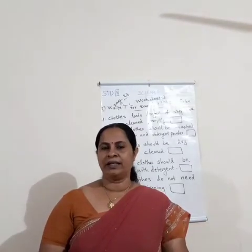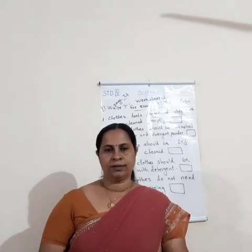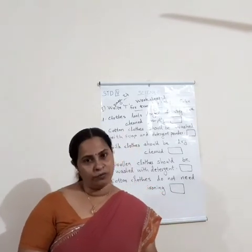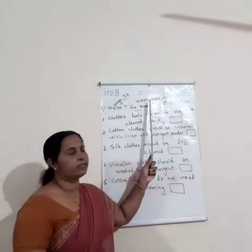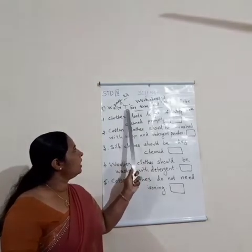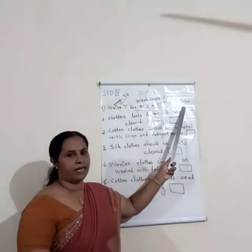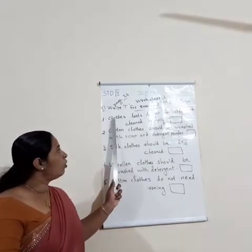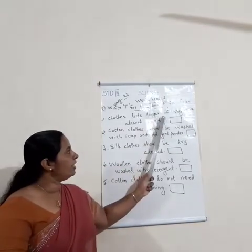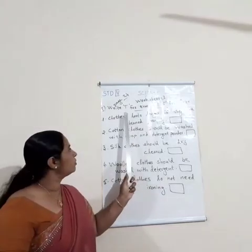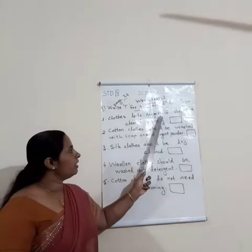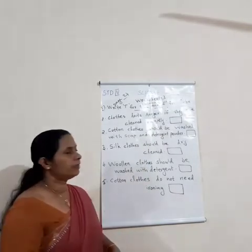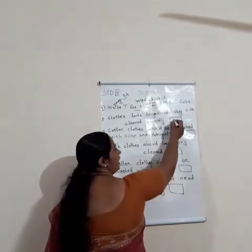Now we are going to complete the worksheet given in the textbook. Please open the back side of your textbook, page number 24, worksheet 3. Write T for true and F for false. First statement: clothes last longer if they are cleaned promptly — this is a true statement, so write T.